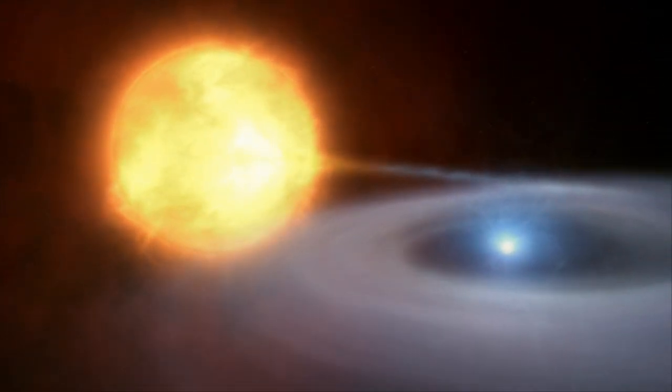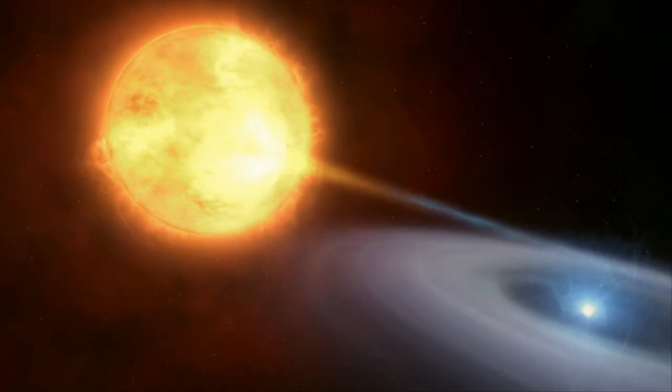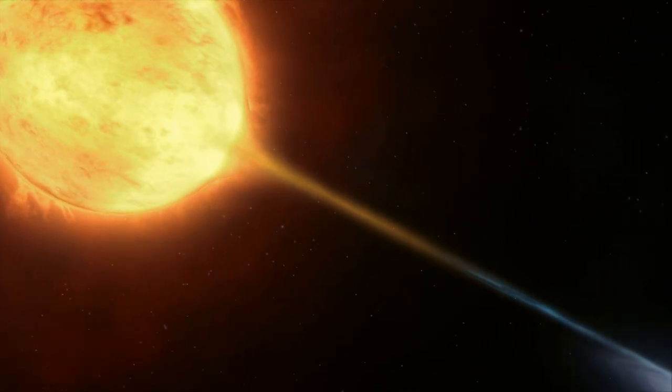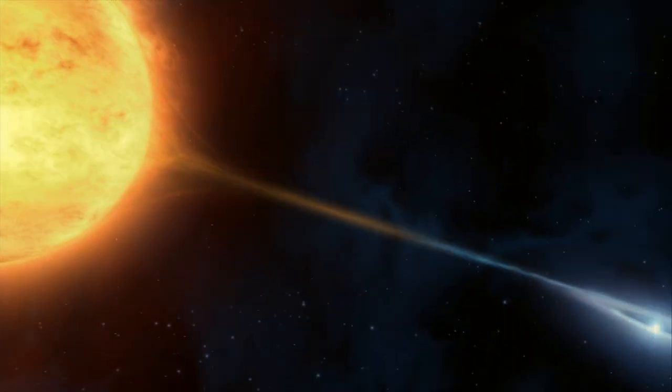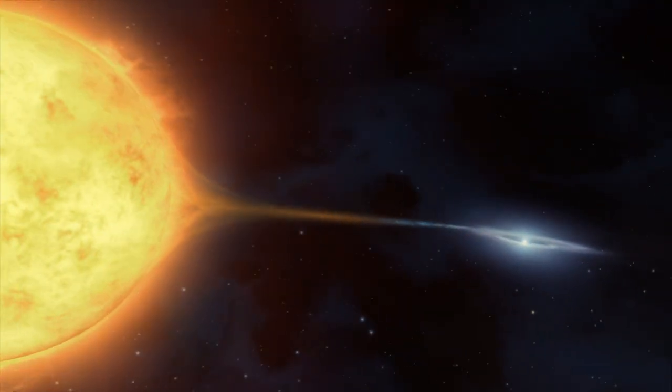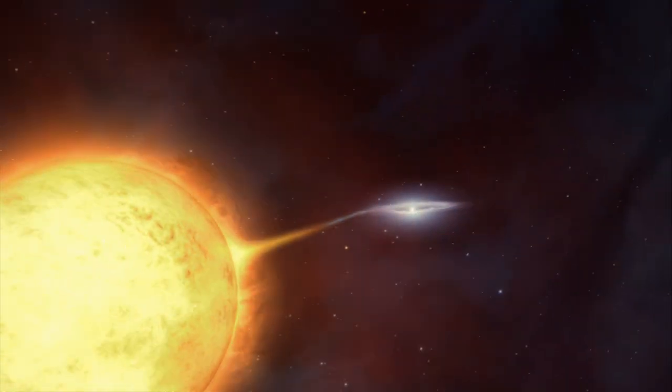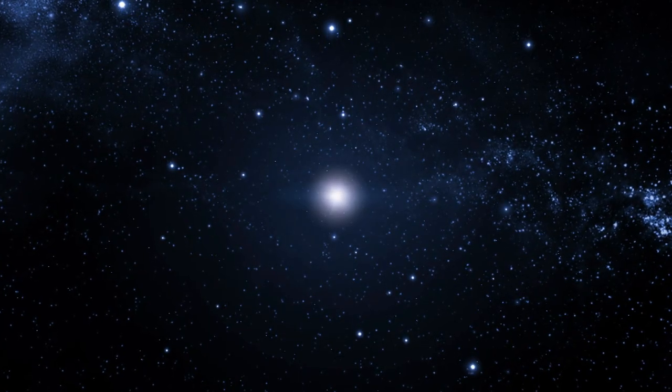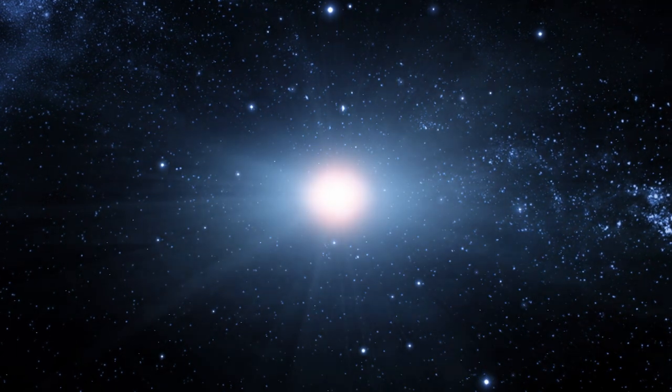As well as telling us about the star that has just died, supernovae are powerful tools for probing the cosmos. The supernovae that come from exploding white dwarfs have a peculiar property. They all have the same intrinsic brightness. This means that how bright they appear to a telescope is a measure of how distant they are, much like a street light looks bright when you're near it and dim when you're far away.